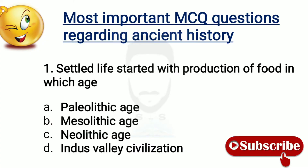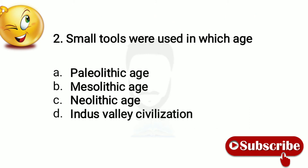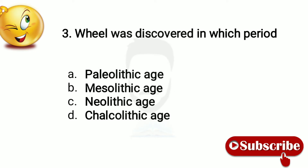Question number 1: Settled life started with production of food in which age? The answer is option number C, Neolithic age. Question 2: Small tools were used in which age? The answer is Mesolithic age. Question 3: Wheel was discovered in which period? The answer is Neolithic age.